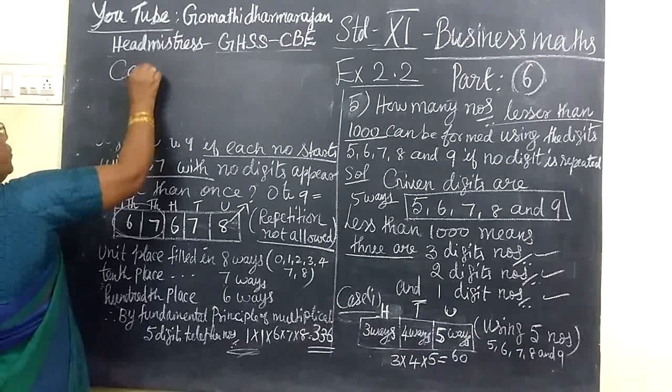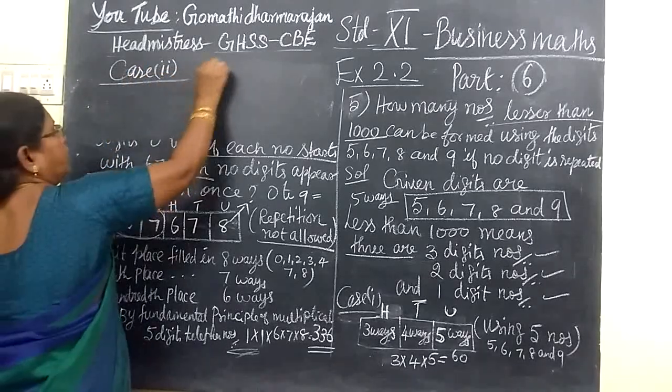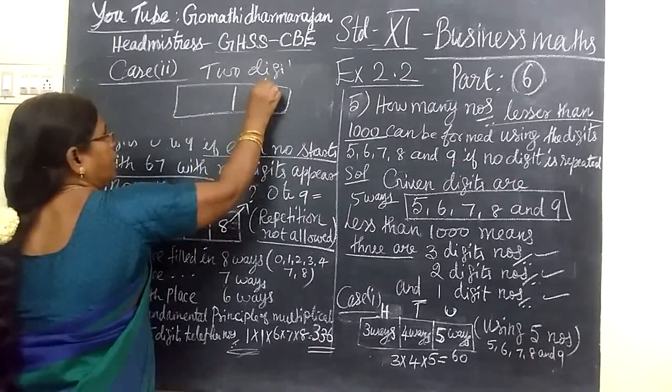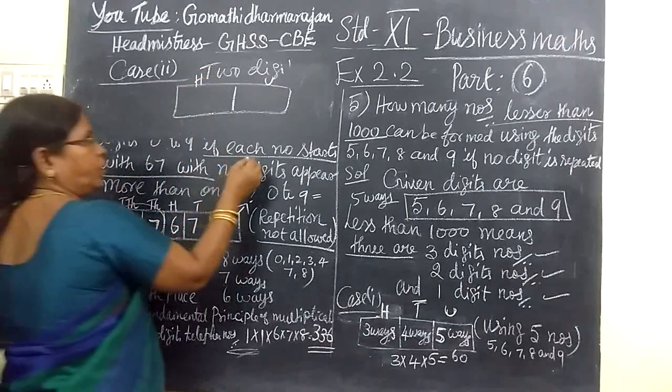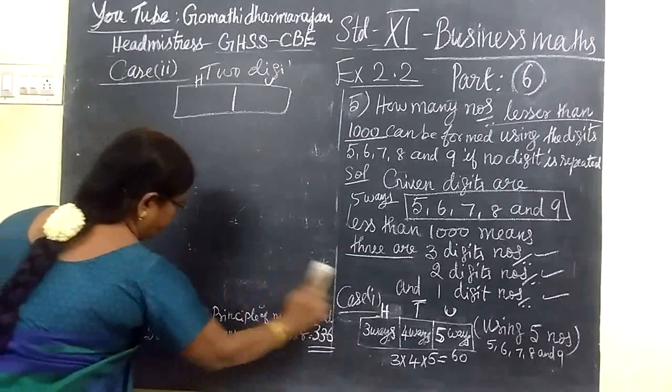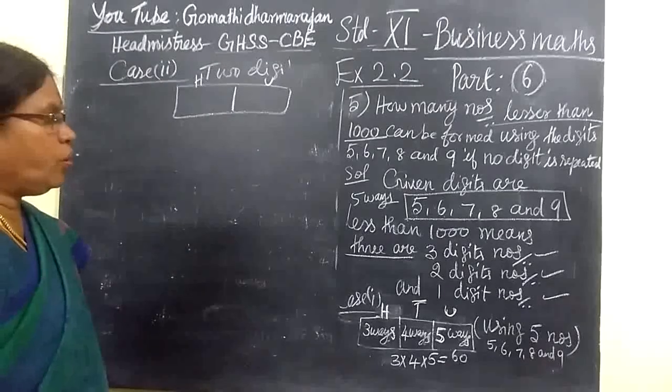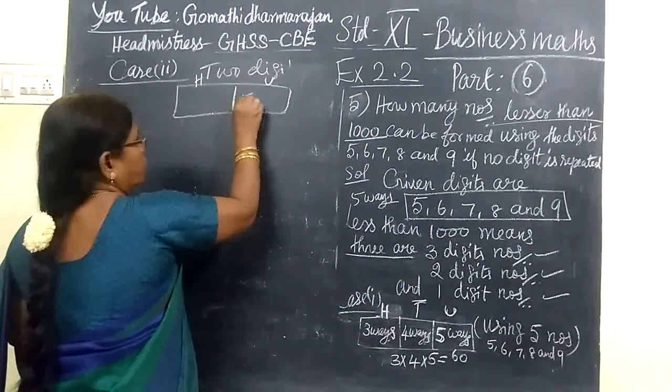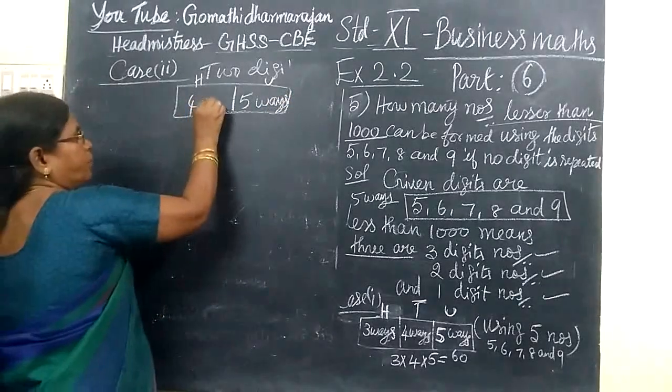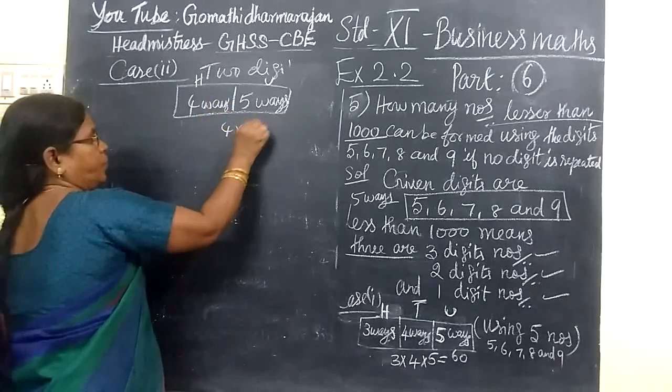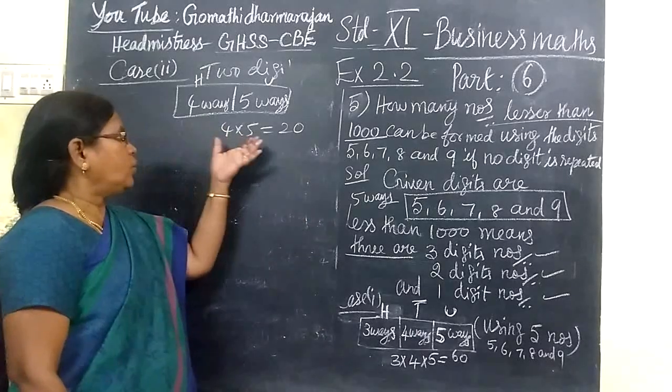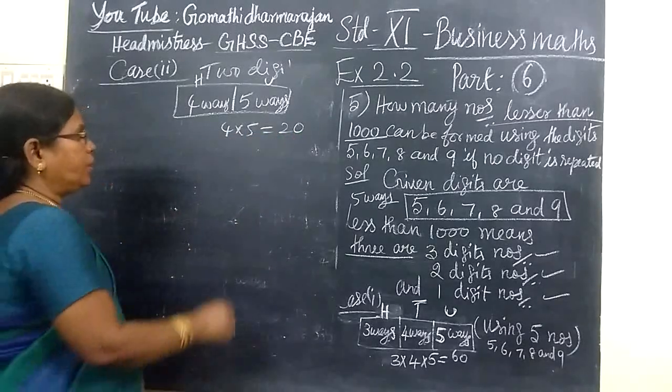Now come to case 2. Here we are forming 2-digit number. 2-digit number, we are selecting unit place, then tens place. So in unit place, we have 5 numbers. So you can fill this in 5 ways and this tens place can be filled in 4 ways. So therefore, total number of ways: 4 into 5. By fundamental principle of multiplication, the total number of ways equal to 4 into 5, 20 ways.